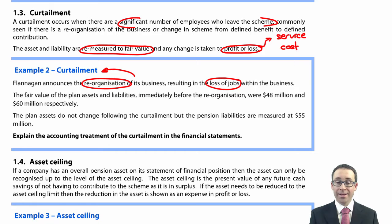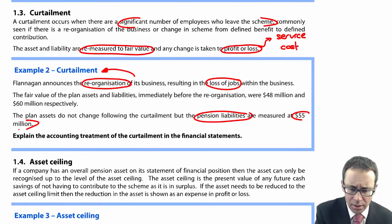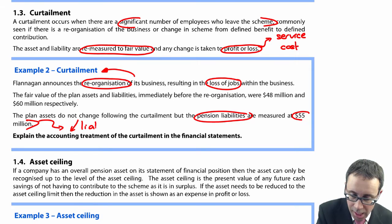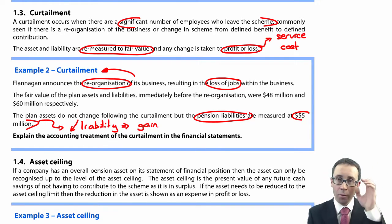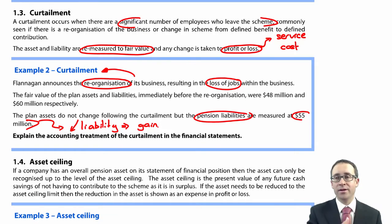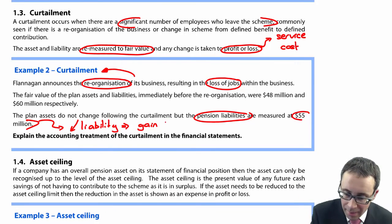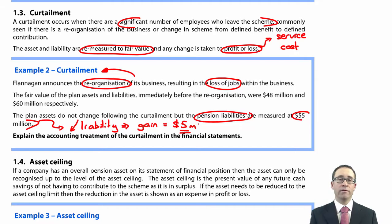The plan assets do not change, but the pension liabilities are re-measured at 55 million. So what you've got is a reduction in your liability. A reduction in a liability is a gain. Normally you would make a loss when you re-measure the pension scheme, because normally you have to compensate the employees for being made redundant or for leaving the better scheme for the worse scheme — going from defined benefit to defined contribution. So normally the liabilities go up. But in this example, the liabilities have gone down, and if liabilities have gone down you have a gain equal to the difference of five million dollars. That gain goes immediately to profit or loss.